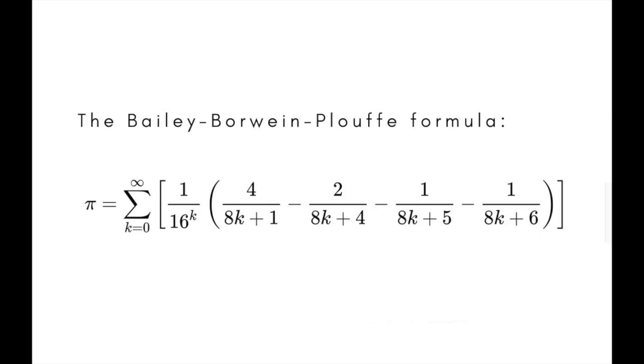Variations on the Bailey-Borwein-Plouffe formula can be used to find other irrational numbers, like pi, whose decimal extensions go on forever without repeating.